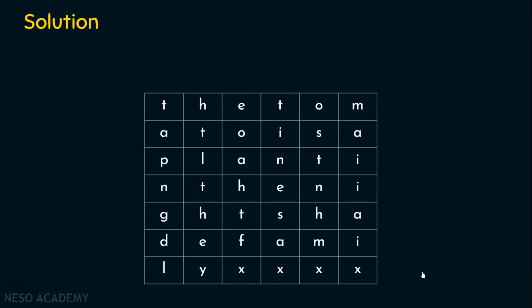To generate the ciphertext, we need the keyword — which is 'tomato.' In the example I solved earlier using row-column transposition, I used numbers for the key. But here it is a keyword with alphabets. So we assign numbers based on alphabetical order: A comes first so A is given number 1, then M is 2, O is 3, and T is 4.